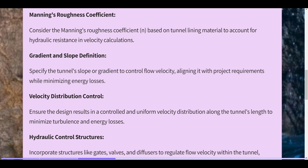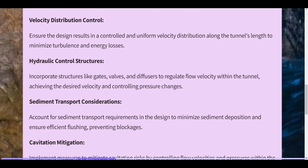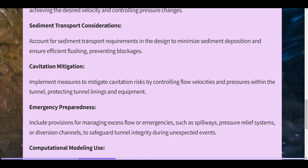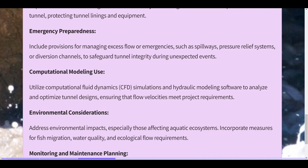Velocity distribution control ensures uniform velocity along the tunnel's length to minimize turbulence and energy losses. Hydraulic control structures such as gates, valves, and diffusers regulate flow velocity and pressure. Sediment transport considerations minimize deposition and blockages. Cavitation mitigation controls flow velocities and pressures to protect tunnel linings. Emergency preparedness includes spillways, pressure relief systems, or diversion channels. Computational Fluid Dynamics simulations and hydraulic modeling software are used to optimize tunnel designs.